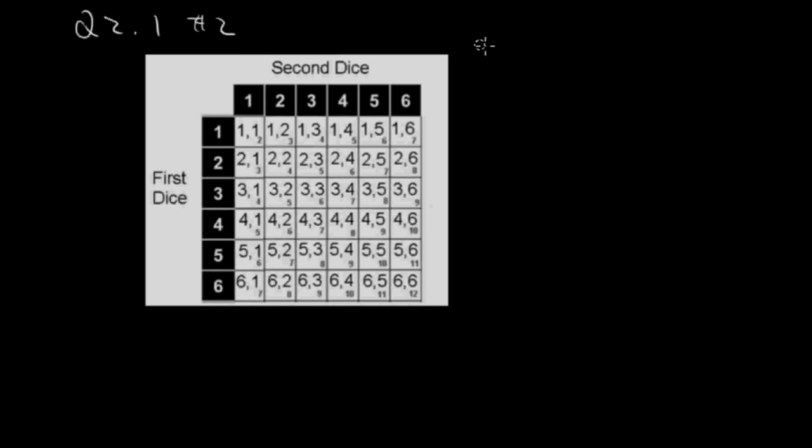For this problem, we want to know the number of elements in the event where the difference of rolls is at least 3.